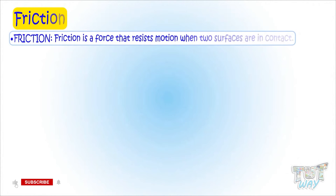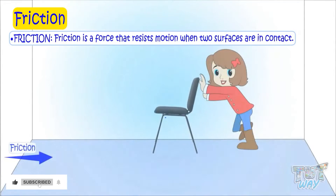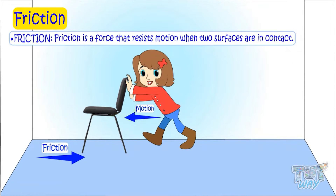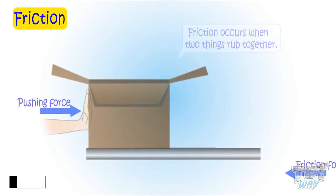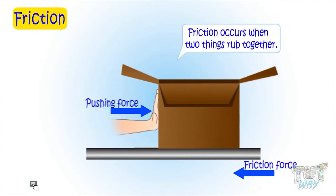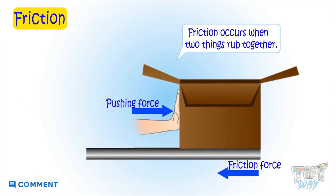Friction is a force that resists motion when two surfaces are in contact with each other. Friction occurs when two things rub together. Let's see it with an example.